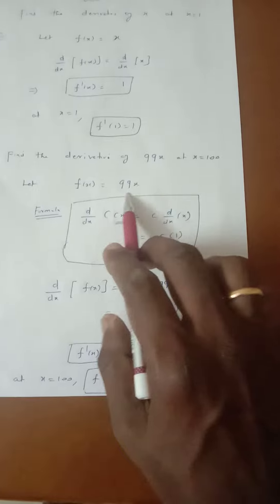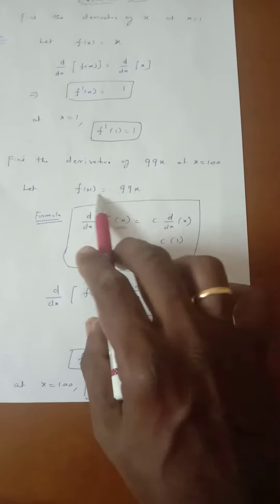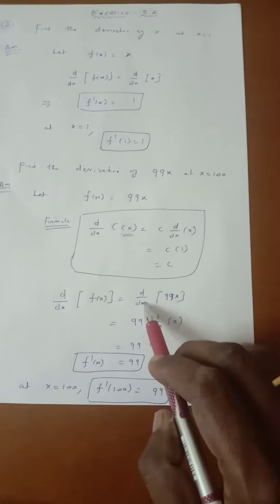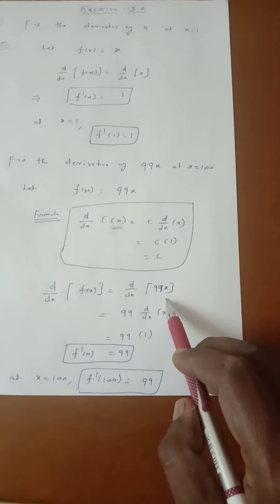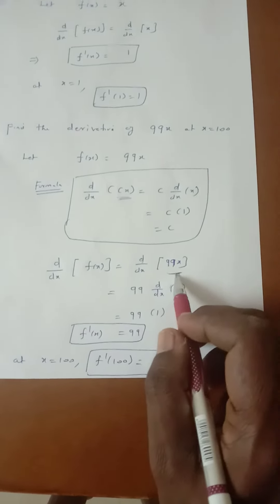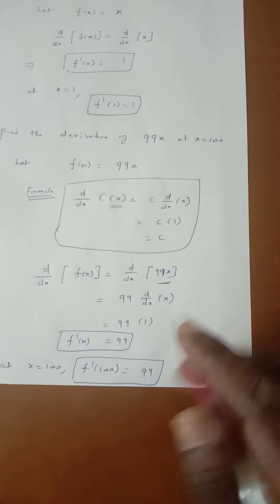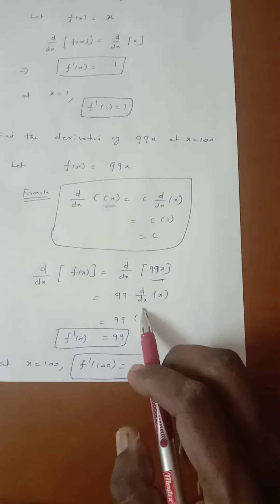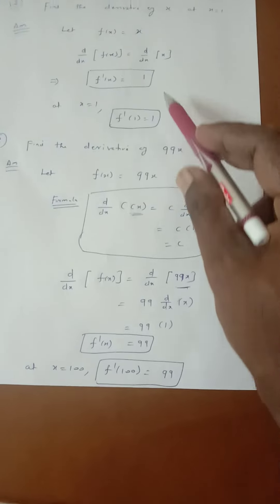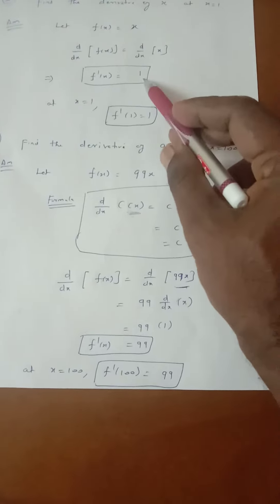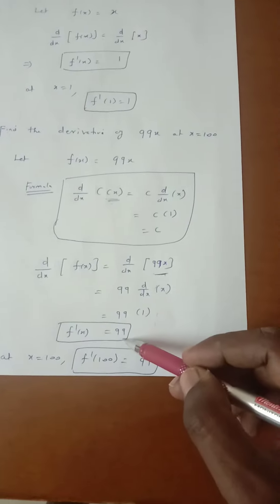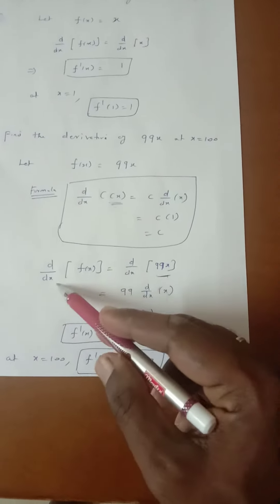Differentiating on both sides: d by dx of f of x equal to d by dx of 99x. Here 99 is a constant and x is the function, so 99 is taken outside: 99 into d by dx of x. Since d by dx of x is 1, we get 99 into 1 which is 99.